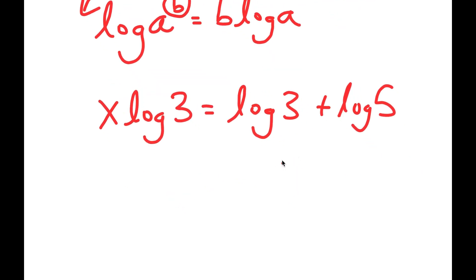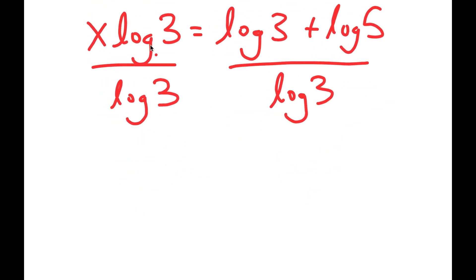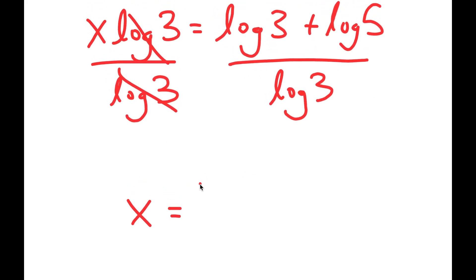So now from here, I'm going to divide both sides by log 3. So from my left hand side, these two cancel out, and from my right hand side, I get x is equal to log 3 plus log 5 over log 3.